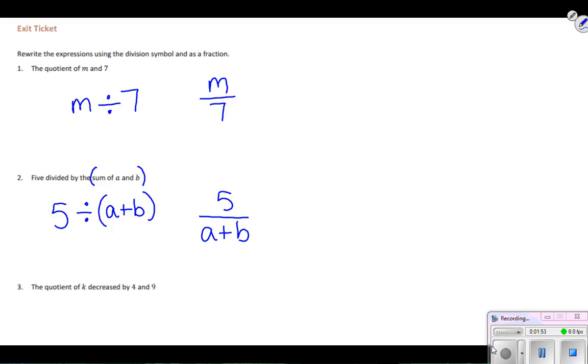And the last one, number three, the quotient of k decreased by 4 and 9. So the quotient I know I'm going to divide something, and to get a quotient I have to have a dividend divided by a divisor. So this 'and' is telling me I have two parts - I have the quotient of k decreased by 4 is part of it, and 9 is the other part.